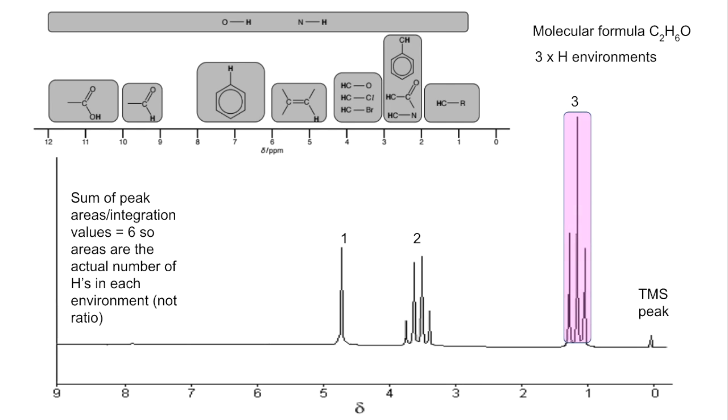The next peak we'll look at is this one here. All we're going to do is refer to the datasheet. It's obviously an HCR environment. Next to each peak, I encourage my students to just write down what the information is telling us and then put it together at the end. So HCR, it's a triplet, so the protons causing the peak must be adjacent to a CH2 group. The area is 3, so that must mean it's a CH3 group causing the peak. This is telling us that in the molecule, we've got a CH3 next to a CH2, and those red hydrogens are the ones causing the signal.